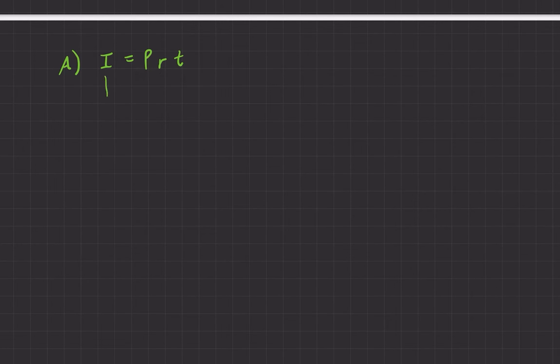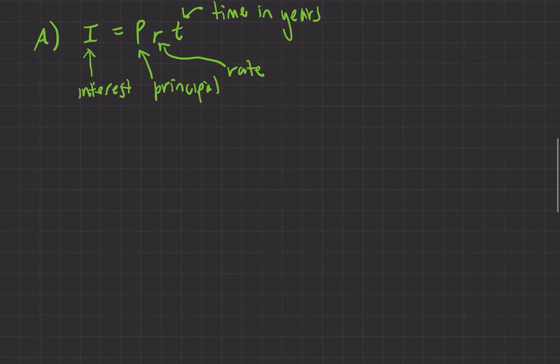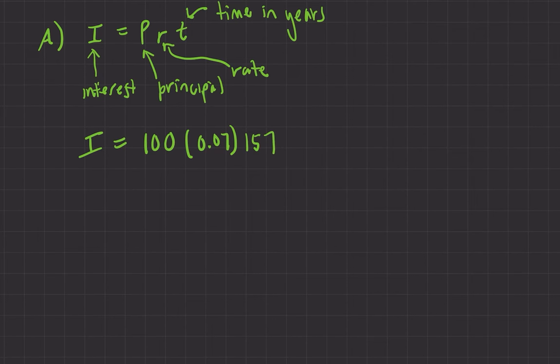Simple interest is not so exciting. We have the formula: the interest you make equals P times R times T. Here I is the interest — the money you're going to get at the end. P is the principal, that's what you start with. R is the interest rate as a decimal. And T is time in years. In our case, it's saying you have $100 in the bank, the interest rate is 7% so you get $7, and you get that every year — so you get it 157 times. We have 100 times 0.07 times 157, which gives you $1,099.